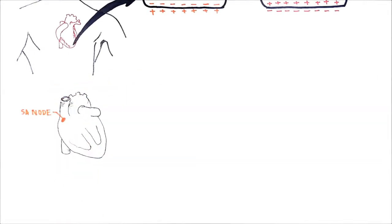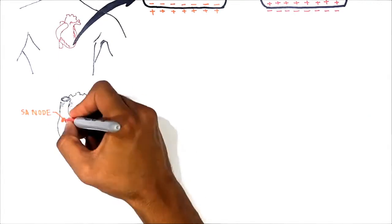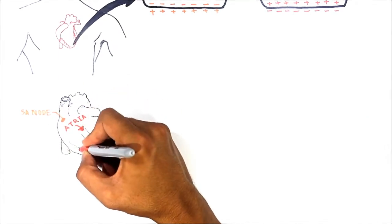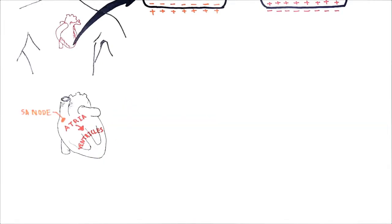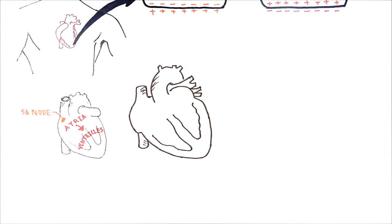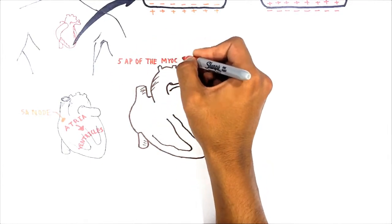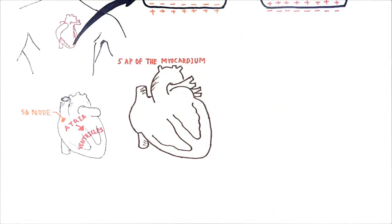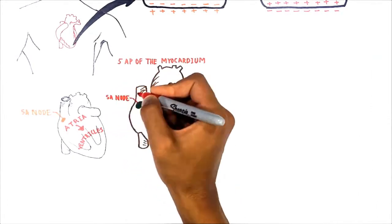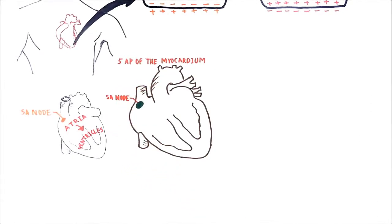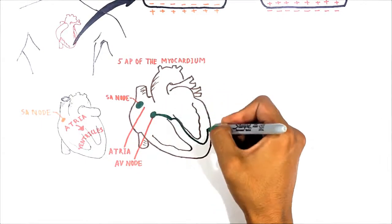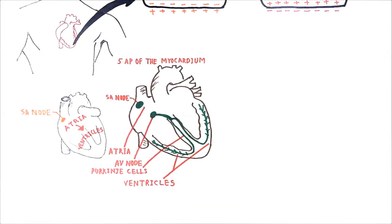The cardiac muscle itself must also receive electrical impulses in order to contract and pump blood through the vessels. This electrical impulse, or action potential, is generated in the SA node continuously because it is a natural pacemaker. Only then does this action potential spread to the atria and ventricles, causing them to contract and pump blood. It is important to note that the cardiac action potential differs significantly for each portion of the heart.